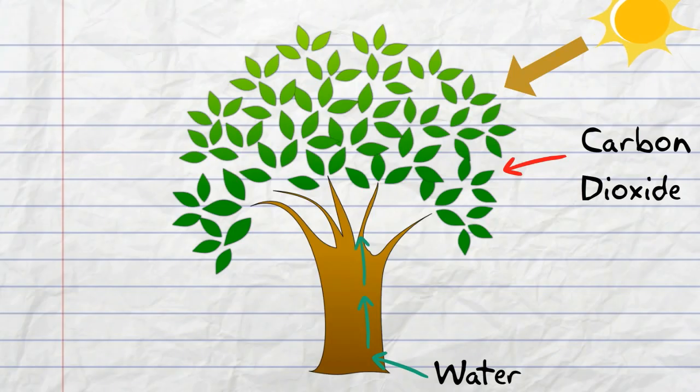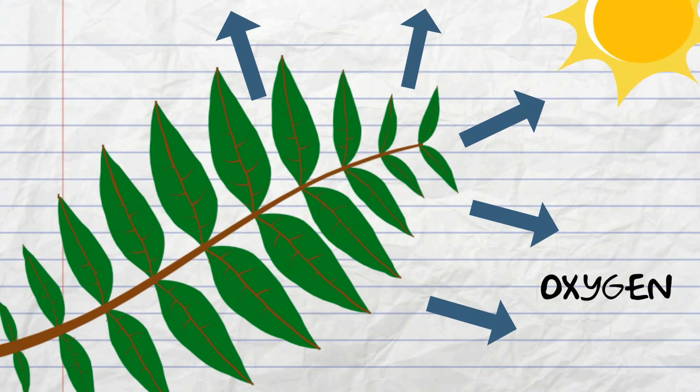This food making process is called photosynthesis. Oxygen is given out through the stomata when photosynthesis takes place in the plant.